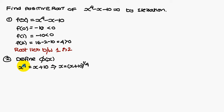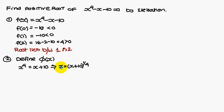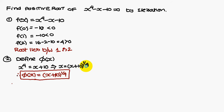So, x power 4 is equal to x plus 10. From this equation, x power 4 you can write as x plus 10. Where x is equal to x plus 10 whole power 1 by 4 — taking the 1 by 4 power on both sides. Therefore, this one you can write as phi of x. The new function is phi of x equal to x plus 10 whole power 1 by 4.